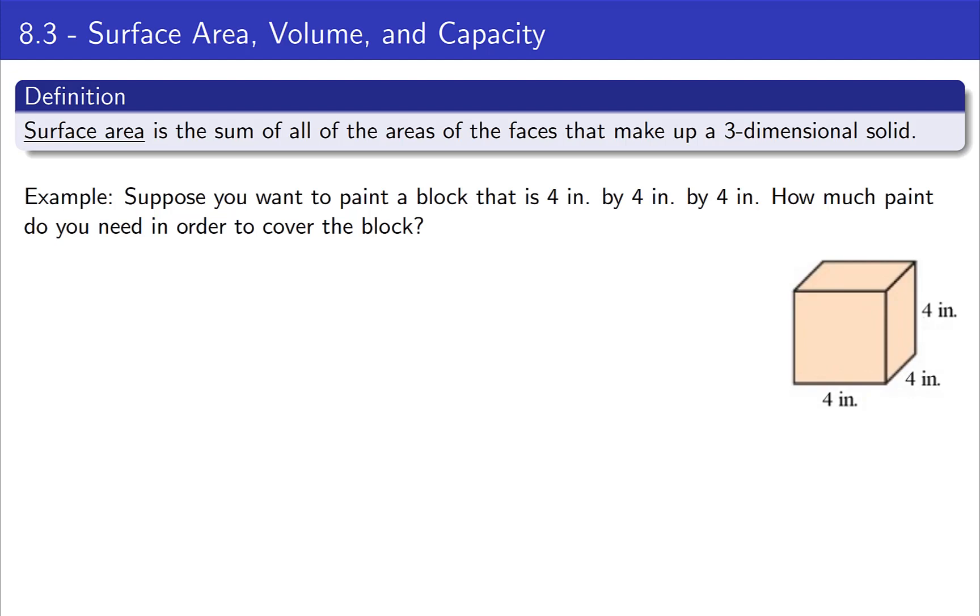If the object you're looking at is made of polygons, it's pretty easy just to take the area of each of the individual faces and then add it all together. But surface area can also be applied to other objects, such as cones, cylinders, spheres, etc. You just need a special formula for those, but for our purposes, we will focus only on rectangular solids.